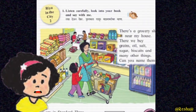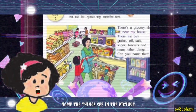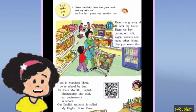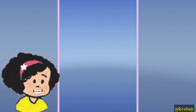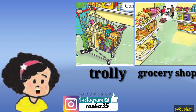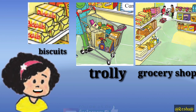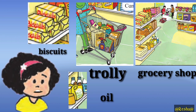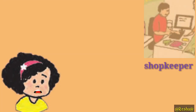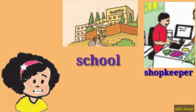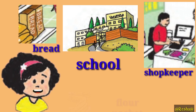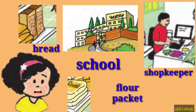Now we will learn to name the things we see in the picture. Grocery shop, trolley, biscuits, oil, shopkeeper, school, bread, flour packet.